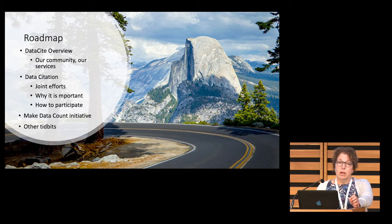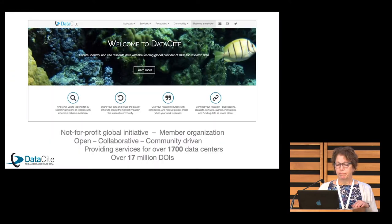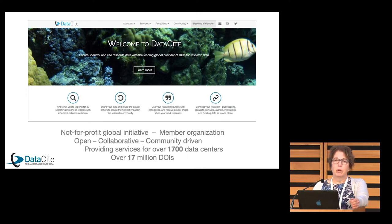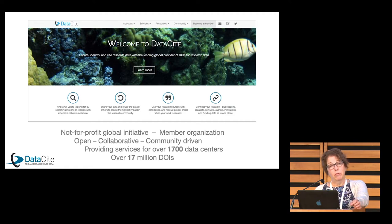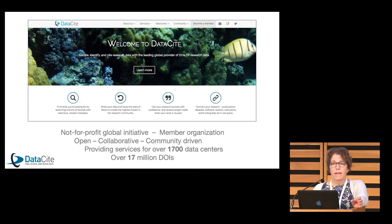And then talk a little bit about the Make Data Count initiative and some other tidbits. DataCite was founded in 2009. We're a non-profit organization. We have seven staff members and we're located in Germany. What we work on is providing DOIs for research data, and we provide services to over 1,700 data centers and over 17 million DOIs. We're really a tiny little baby compared to Crossref, but we have a very focused community that we work with.